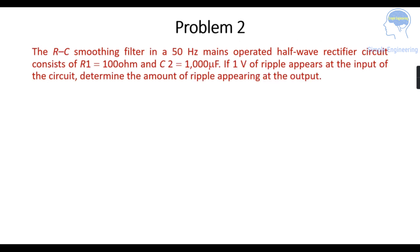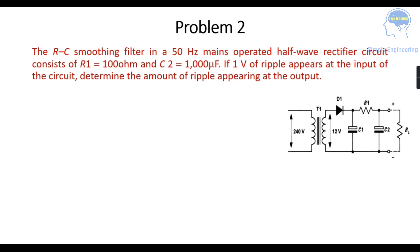Problem 2: The RC smoothing filter in a 50 Hz mains-operated half-wave rectifier circuit consists of resistance R1 equal to 100 ohms and C2 equal to 1000 microfarad. If 1 volt of ripple appears at the input of the circuit, we have to determine the amount of ripple appearing at the output. This is the diagram — an RC smoothing circuit with a capacitive filter half-wave rectifier with R and C connected across it.